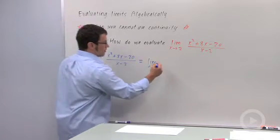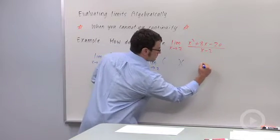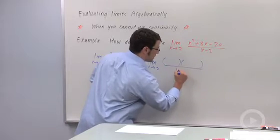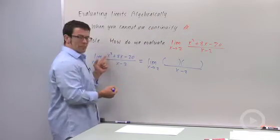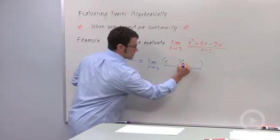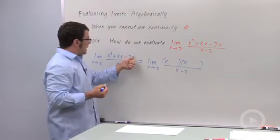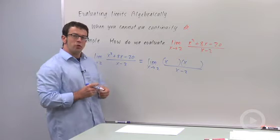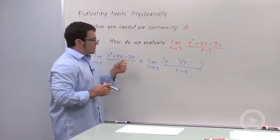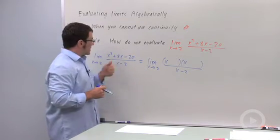This numerator can be written as a product of two linear functions. And they're both going to start with x. We'll have x plus or minus something, x plus or minus something. I need to look at the factors of 20, factors of negative 20, that are going to give me a sum of 8.